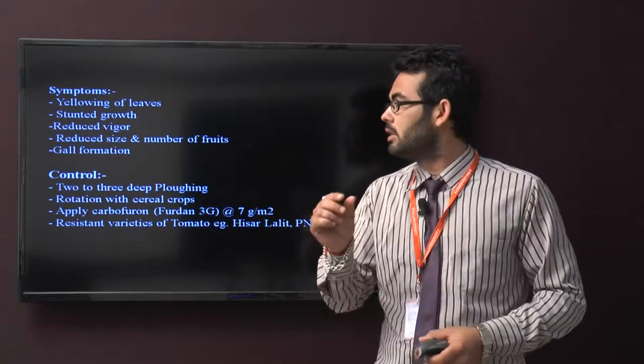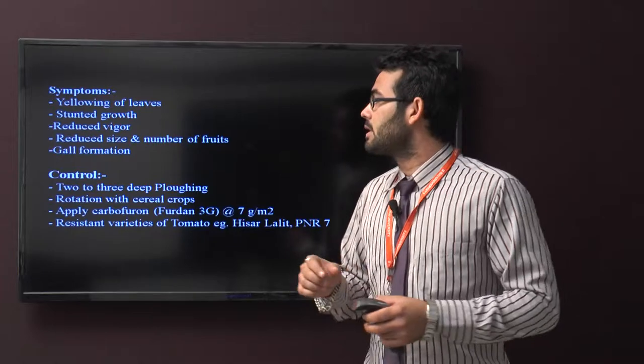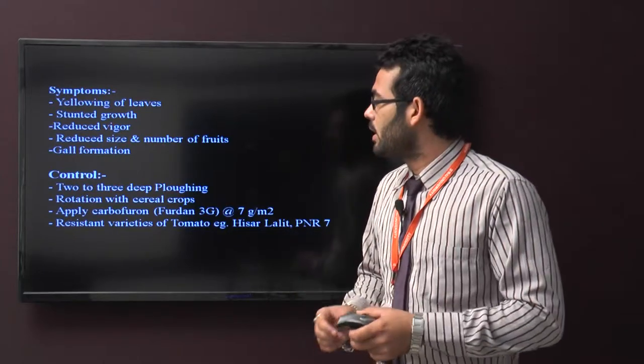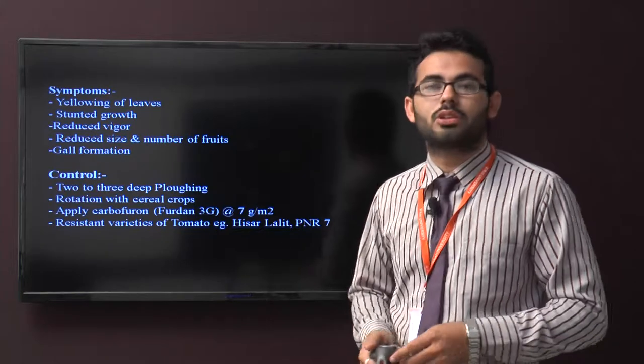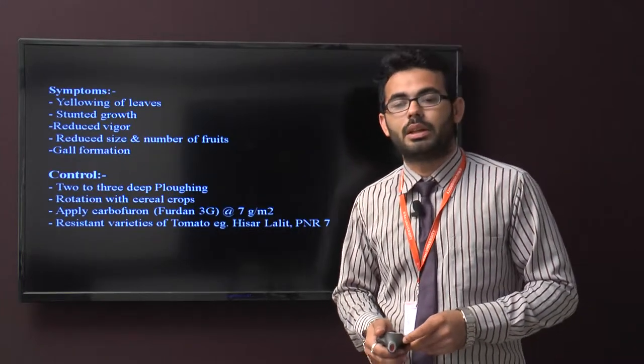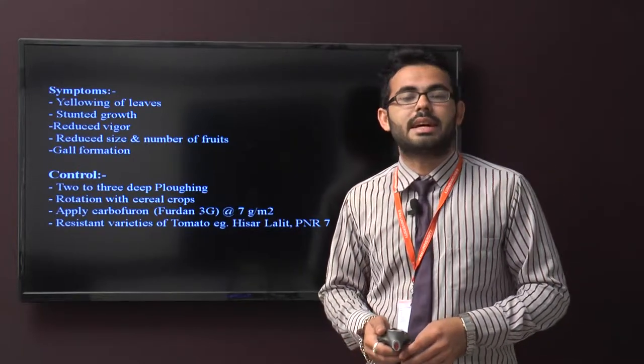Gall formation is also called nodes on the root and leaf surface. Control includes two to three deep plowings, rotation with cereal crops, and using carbofuran. Use resistant varieties of tomato like Hisar, Lalith, and PNR-7.